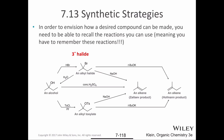With tertiary halides, in order to envision how a desired compound can be made, you need to recall the reactions you can use — which is really saying you need to have these reactions memorized. Starting in the top right: treating a tertiary alkyl halide with t-butoxide, a hindered base, gives the Hofmann product as the major product. Similarly, a tosylate treated with t-butoxide gives the same Hofmann product.